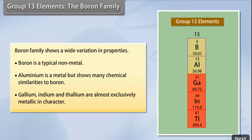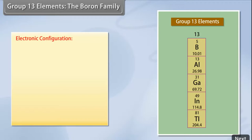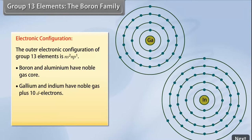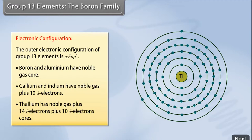Electronic configuration: The outer electronic configuration of group 13 elements is ns² np¹. Boron and aluminium have noble gas cores. Gallium and indium have noble gas plus 10 d electrons. Thallium has noble gas plus 14 f electrons plus 10 d electron cores.